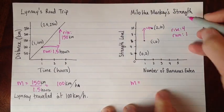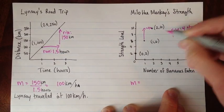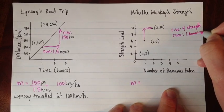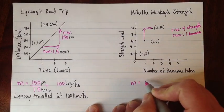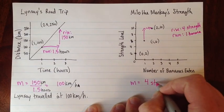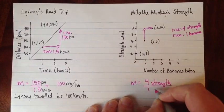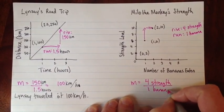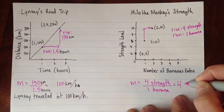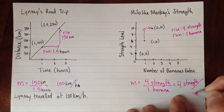The rise was the strength, and the run, that 1, that was 1 banana. So the slope is 4 strengths divided by 1 banana, which is, and 4 divided by 1 is 4 strengths per banana.